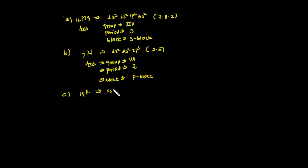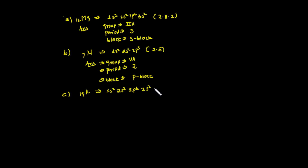The electron configuration of potassium: 1s2, 2s2, 2p6, 3s2, 3p6, 4s1. The last electron enters into 4s orbital, making it an s-block element.